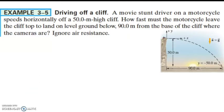Example 3.5: Driving off a cliff. A movie stunt driver on a motorcycle speeds horizontally off a 50-meter high cliff. How fast must the motorcycle leave the top of the cliff to land on level ground below, 90 meters from the base of the cliff where the cameras are? Ignore air resistance.